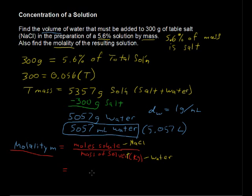We've got how many moles of salt? We have 300 grams. 300 grams of salt multiplied by 1 mole over the molar mass of NaCl.